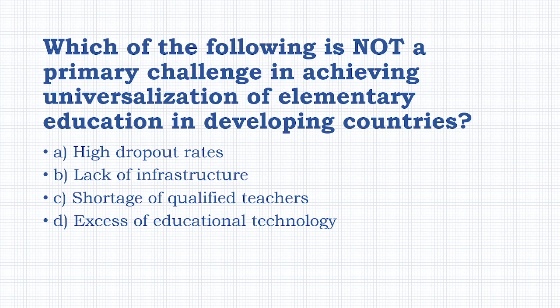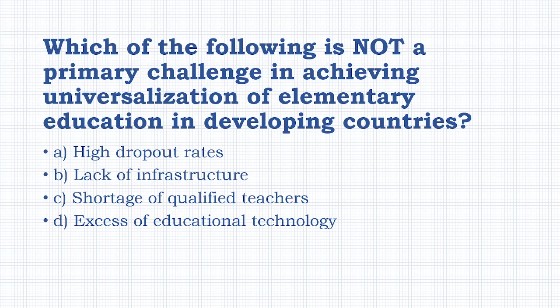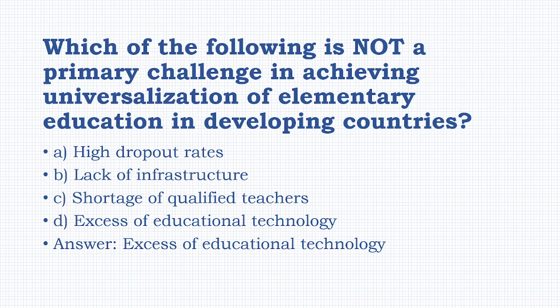Which of the following is not a primary challenge in achieving UEE in developing countries? Options: high dropout rates, lack of infrastructure, shortage of qualified teachers, access to educational technology. The answer is: access to educational technology.